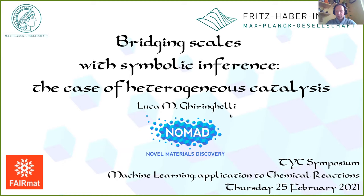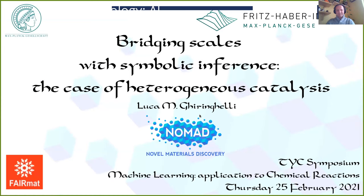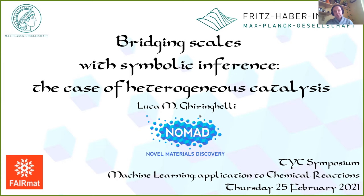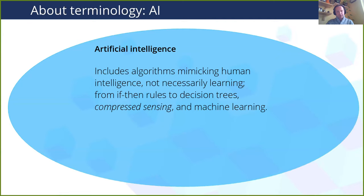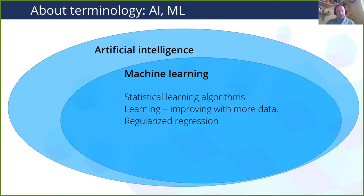I will start by framing the theoretical methods I will talk about. I am mainly a method developer, and even though I chose notable application examples, what I care to communicate today is about methods in AI that are a little less usual. The strange word in the title is 'symbolic inference.' Let me frame it: artificial intelligence includes algorithms mimicking human intelligence generally, machine learning is a subset where algorithms necessarily improve with more data, and it is the realm of regularized regression.